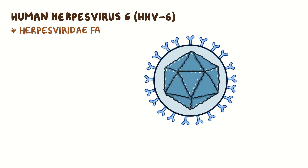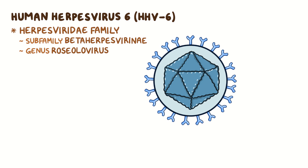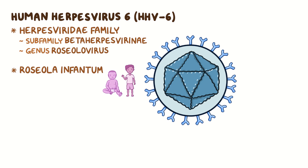Human herpesvirus 6, or HHV6, is a double-stranded DNA virus which belongs to the Herpesviridae family, subfamily Betaherpesvirinae, genus Roseolovirus. HHV6 primary infection is the cause of the common childhood disease called roseola infantum, also known as exanthema subitum, or sixth disease.